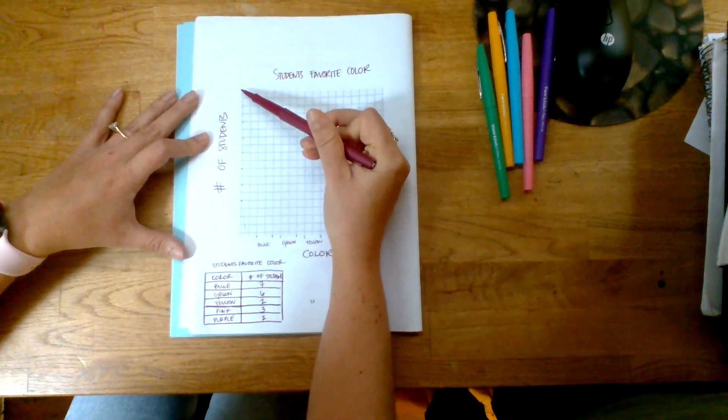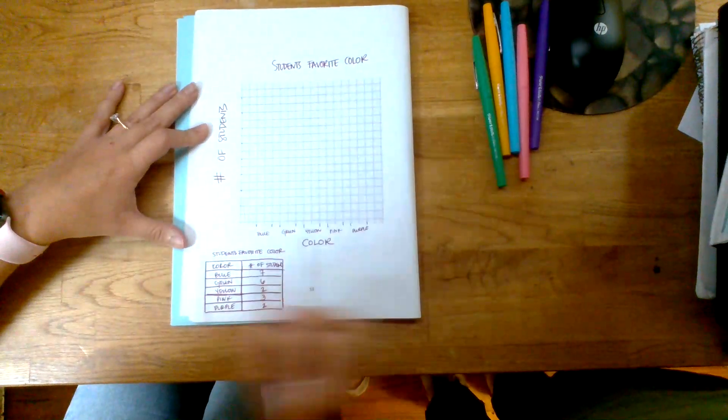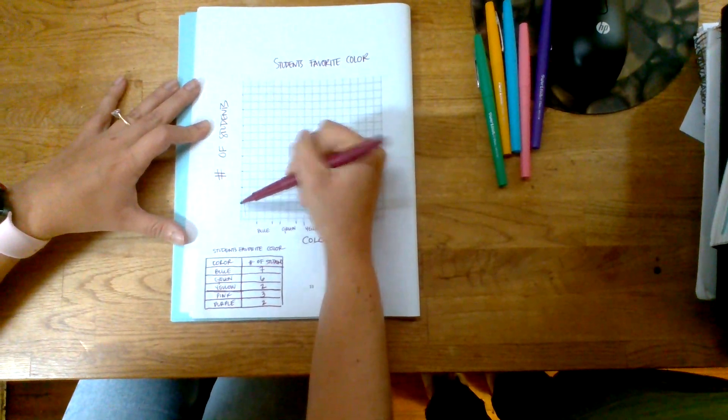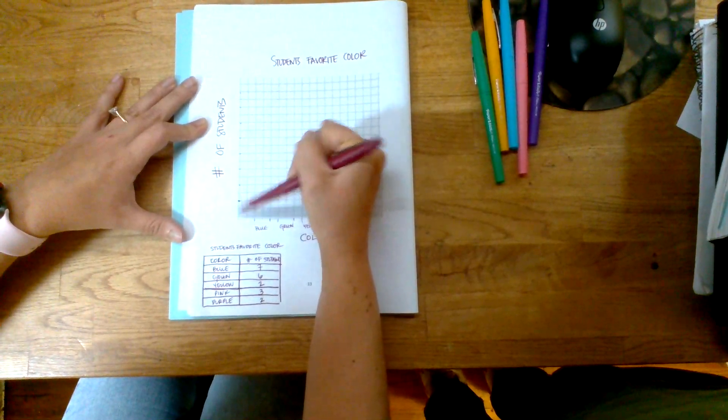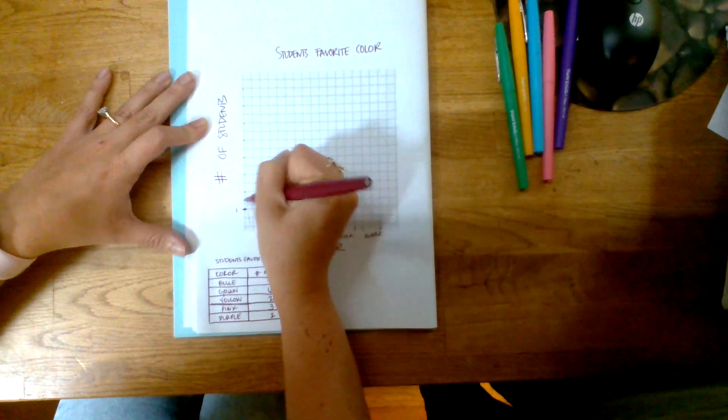A good way to remember the y versus x is that y touches the sky, and your y goes up up up, versus your x which goes horizontal. So I'm going to go ahead and start building here. I think I have enough room to just go up skipping two lines, going up by one.